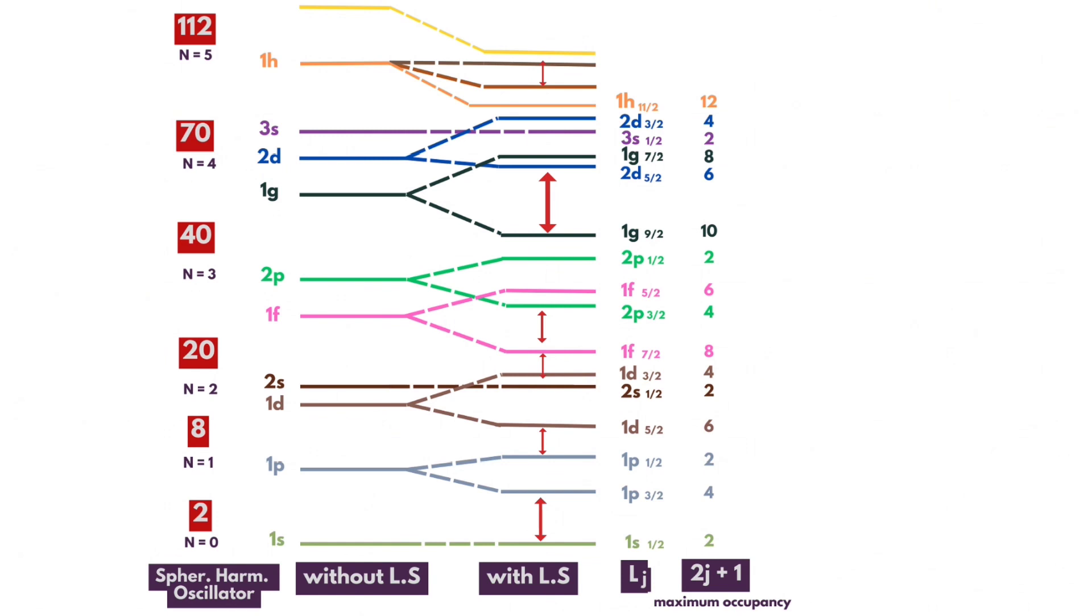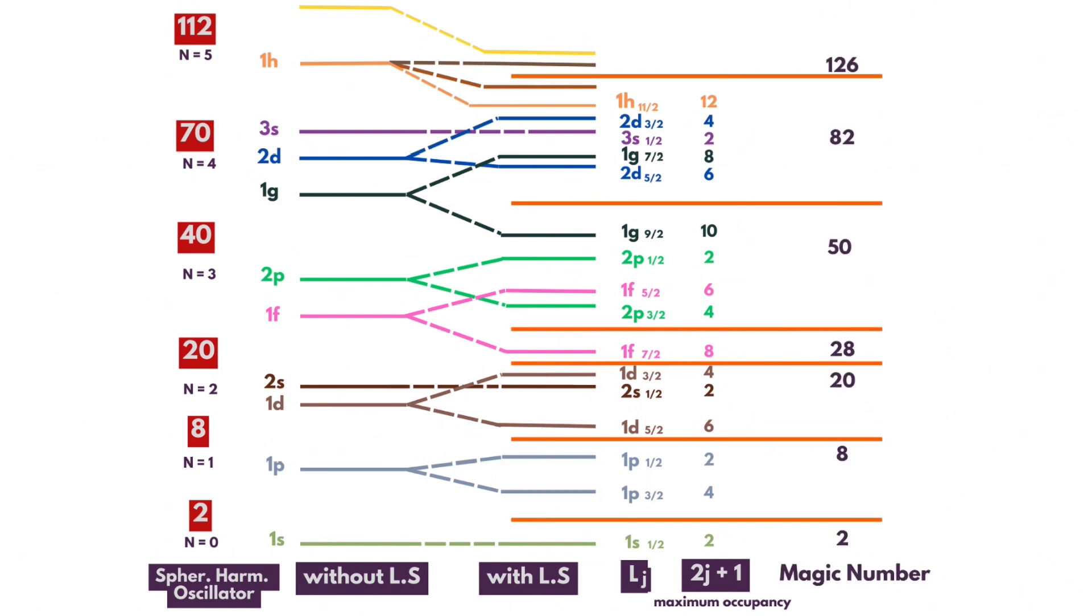So the subshells close to each other in the said term, regardless of the shell where they came from, binds to form a closed shell nucleus. And this is when the magic number appears.